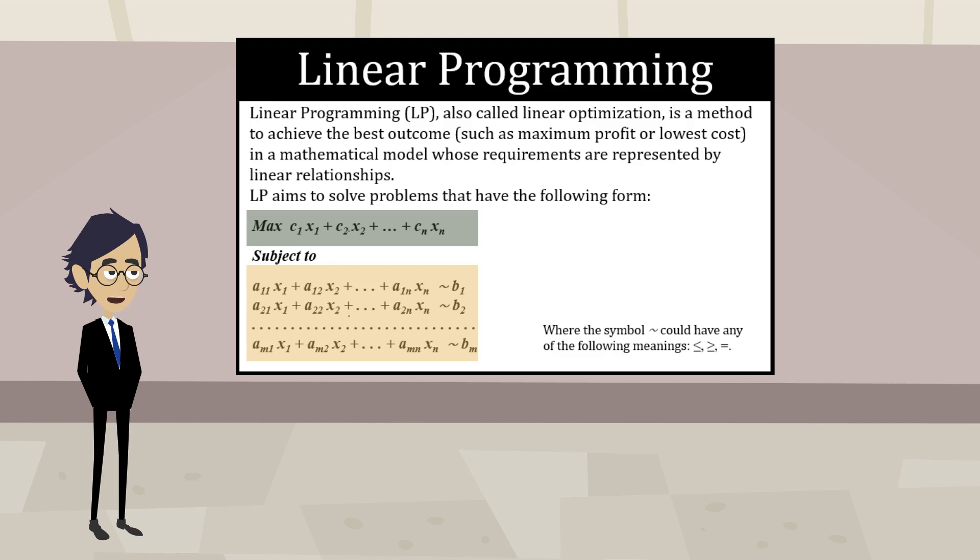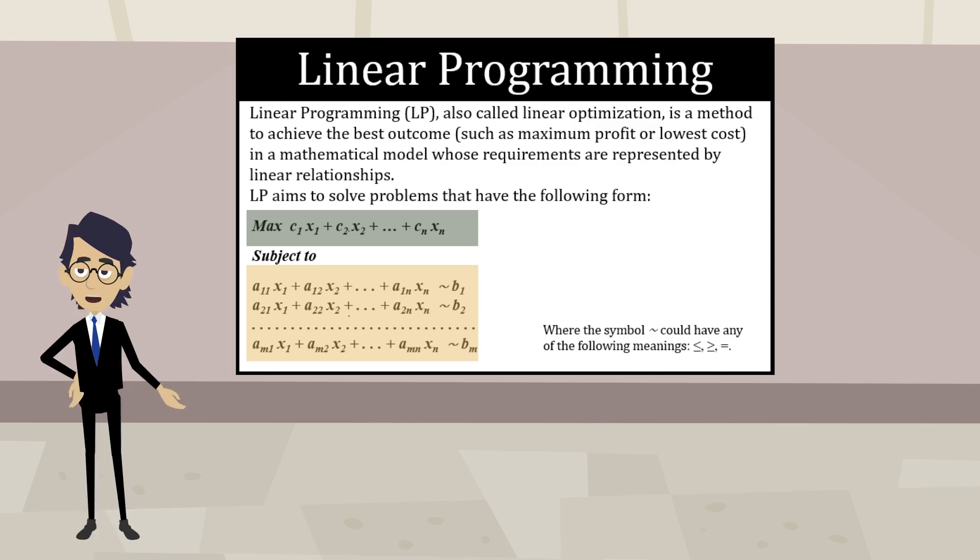The term linear means that all variables have exponent 1. That is, x1, x2, or any other variable, cannot be squared or any other power. If any variable appears raised to another power, then we must use another resolution method, but we could not use linear programming.